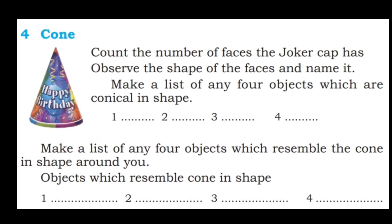Next: cone. Count the number of faces the joker cap has. Observe the shape of the faces and name them. Make a list of four objects which are conical in shape — for example, an ice cream cone, a birthday cap, a triangular pyramid — these are in the cone shape.